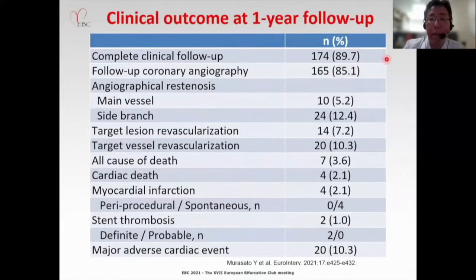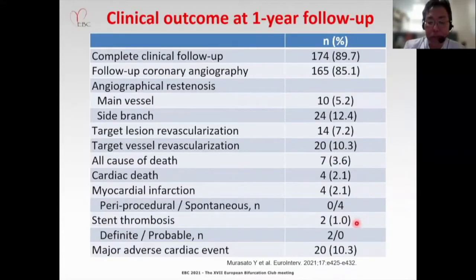Clinical outcomes at one-year follow-up: target lesion revascularization 7.2%, cardiac death 2.1%, myocardial infarction 2.1%, stent thrombosis 1.0%. Overall major adverse cardiac events including all these endpoints showed 10.3%, which is acceptable for bifurcation lesions.